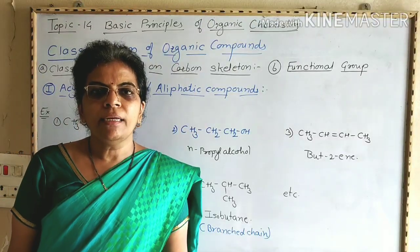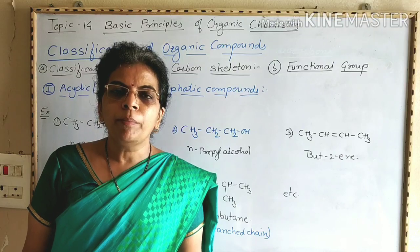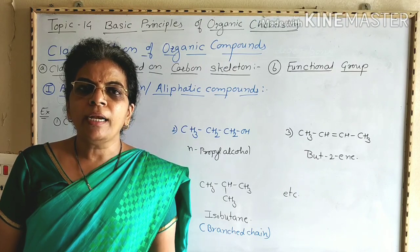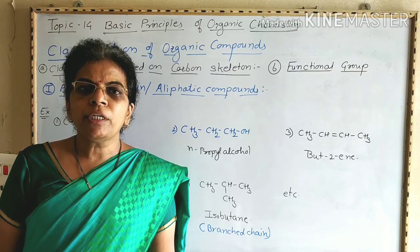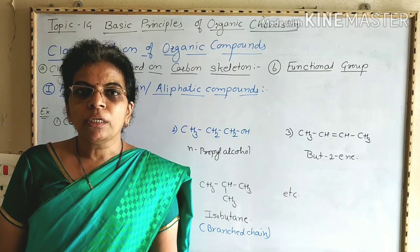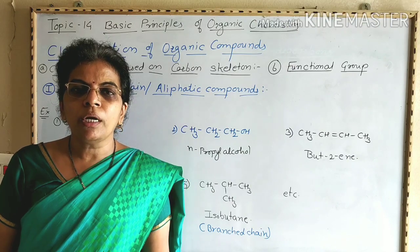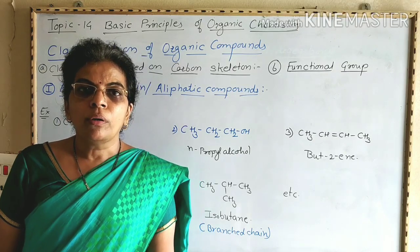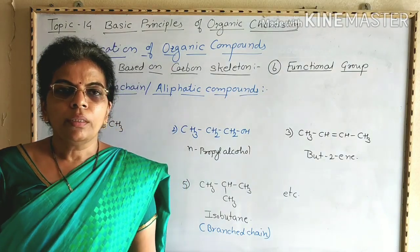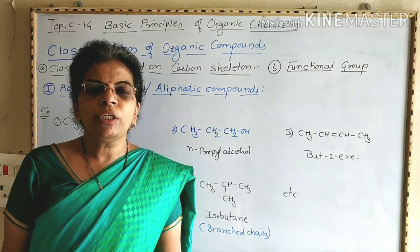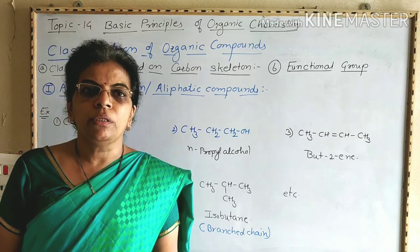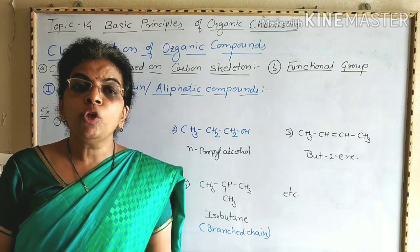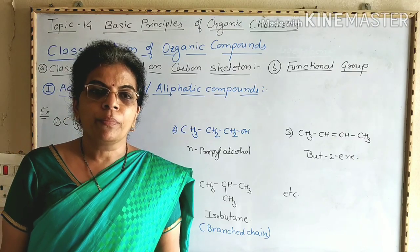Last time we started topic number 14, basic principles of organic chemistry, in which we completed the introduction. After that, we saw structural representation of organic compounds including molecular formula, structural formula, condensed formula, Lewis dot or electronic dot formula, and three-dimensional representation including wedge formula, Fischer projection formula, Newman projection formula, and Sawhorse formula.